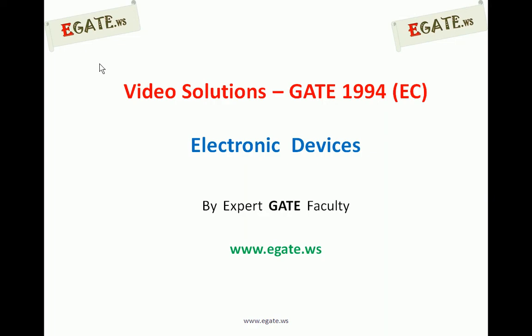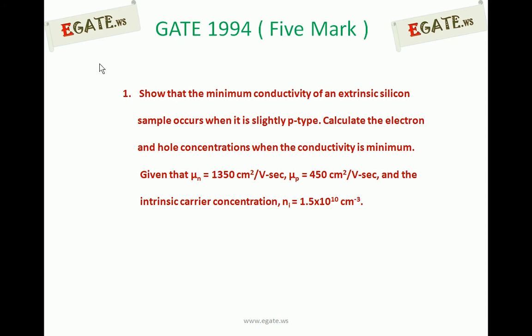Hello. We are discussing the GATE 1994 EC paper and the topic is electronic devices. This is the first 5-mark question from GATE 1994. Show that the minimum conductivity of an extrinsic silicon sample occurs when it is slightly p-type. Calculate the electron and hole concentrations when the conductivity is minimum.